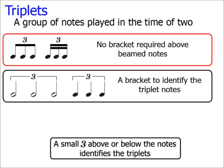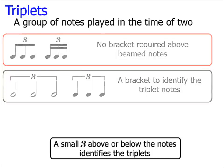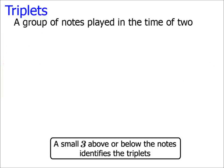So, the important thing to remember is that if there is a three above or below the notes, then they are triplets. If there is no three, then they are not. This seems pretty obvious, but this simple rule trips up a surprising number of music students.